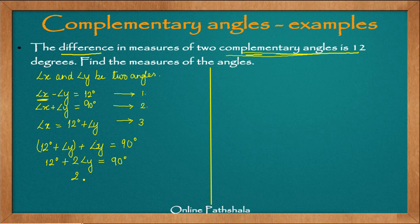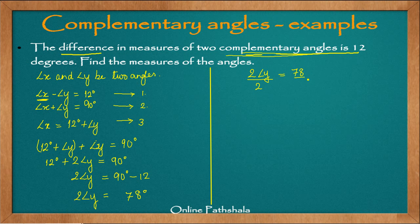Transposing 12 degrees to the right-hand side gives twice angle y equals 90 minus 12. Solving: 10 minus 2 is 8, and 8 minus 1 is 7, so twice angle y equals 78 degrees. Dividing both sides by 2: 78 divided by 2 gives angle y equals 39 degrees.